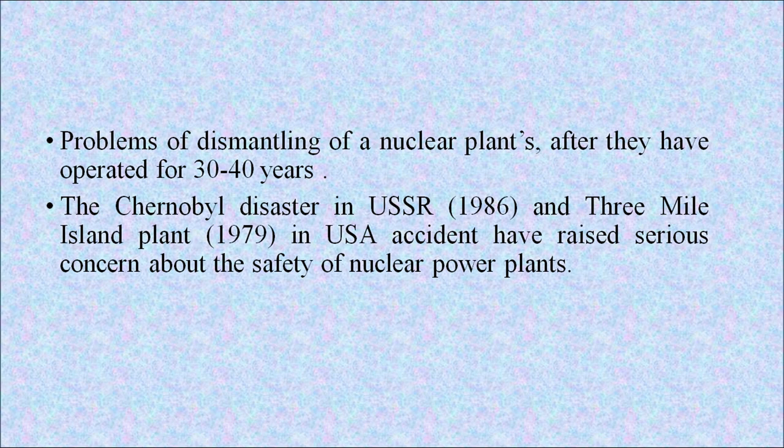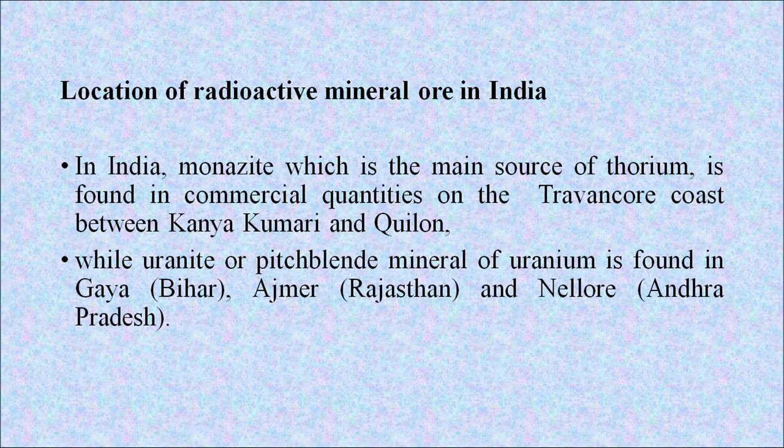Incidents such as the Chernobyl disaster in the USSR in 1986 and the Three Mile Island accident in the US in 1979 have raised serious concerns about the safety of nuclear power plants. In India, monazite — the main source of thorium — is found in commercial quantities on the Travancore coast between Kanyakumari and Quilon. Uranite or pitchblende, the material source of uranium, is found in Gaya in Bihar, Ajmer in Rajasthan and Nellore in Andhra Pradesh.